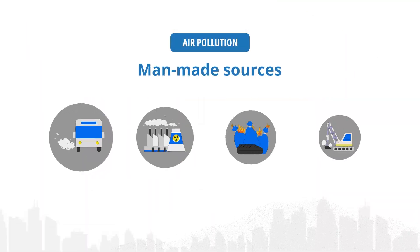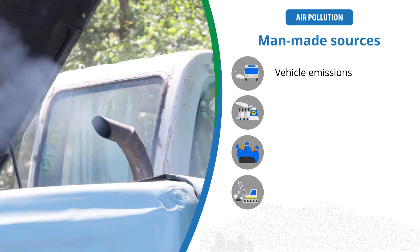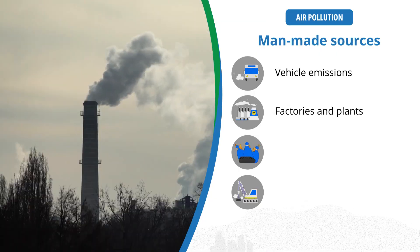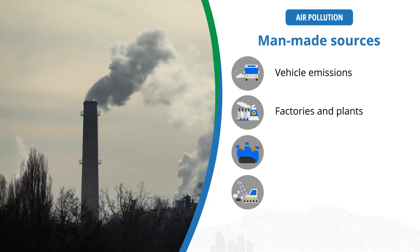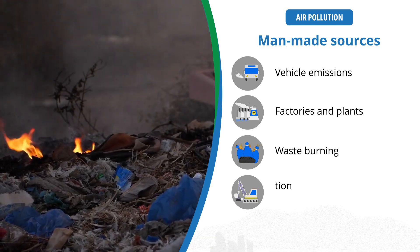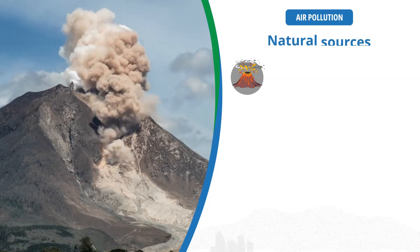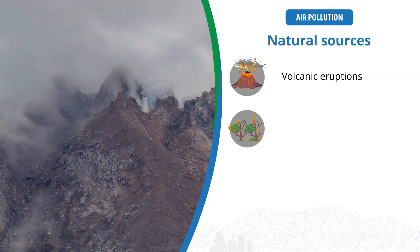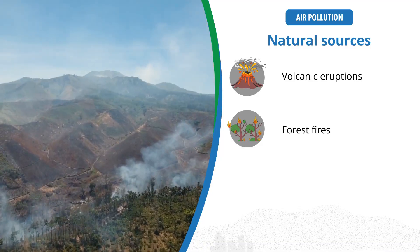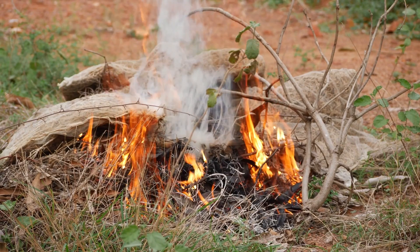Air pollution comes from a variety of sources, often man-made, including vehicle emissions, industrial sources such as factories and plants, and area sources such as waste burning and dust from construction activities. Natural sources like volcanic eruptions or forest fires can also contribute to air pollution. Focusing on reducing man-made sources, however, is crucial for improving air quality.